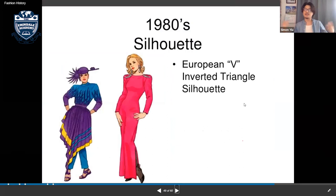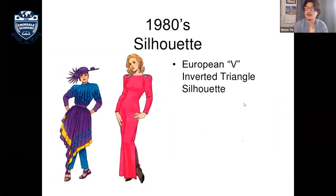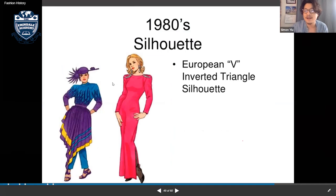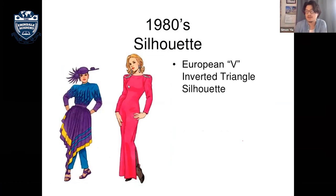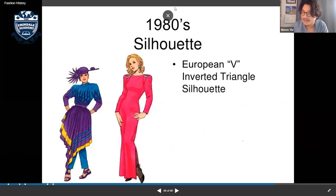The 1980s silhouette was an inverted triangle — a European V-shape — with broad shoulders tapering down.